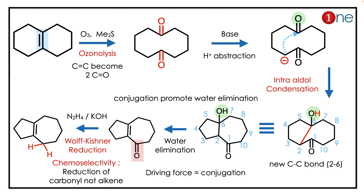You are using the Wolff-Kishner reagent, which is hydrazine and KOH, so it converts C=O to CH₂. Finally, you have the product with a six-membered and five-membered ring. The key concept here is that Wolff-Kishner reduction will selectively reduce the carbonyl, not the alkene.